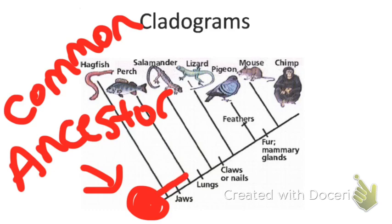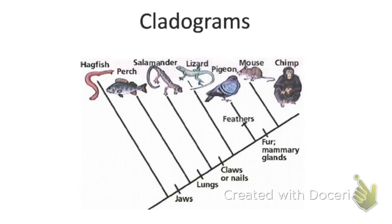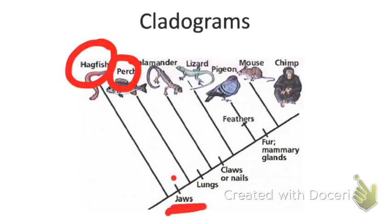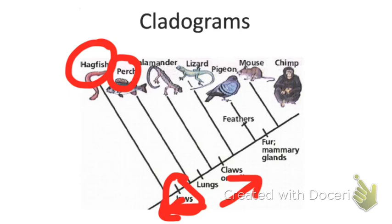Let's look at some examples. If we want to know which trait separates the hagfish and the perch, we look at our line. Jaws are the characteristic that makes the difference between a hagfish and a perch. Everything below the word 'jaws' — those organisms do not have jaws. Everything above 'jaws' — every single one of those does have a jaw. So a hagfish does not have a jaw, but a perch does.